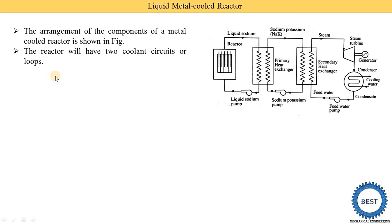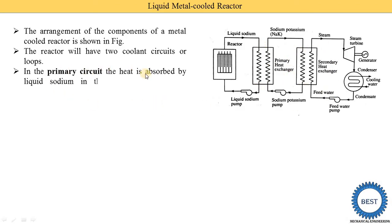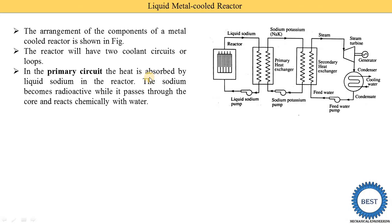The reactor has two coolant circuits or loops — a primary and a secondary. In the primary circuit, heat is absorbed by liquid sodium in the reactor. Fission chain reactions produce heat energy, which is absorbed by the liquid sodium. This sodium becomes radioactive as it passes through the core, and it also reacts chemically with water. The heated liquid sodium is then supplied to the primary heat exchanger.